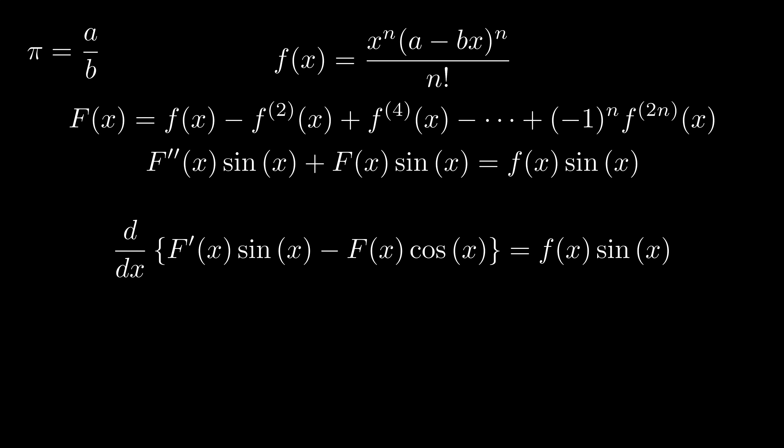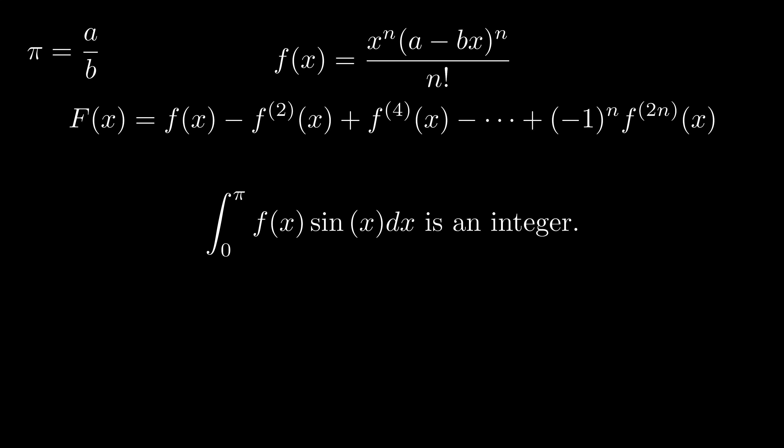We construct such an expression because big F(x) has integer values at zero and pi. To make use of this fact, we have to apply the fundamental theorem of calculus. The integral of a function's derivative is just the function itself. Our left hand side is reduced to big F(pi) plus big F(zero), and they are both integers. Everything we have done up to this point is to prove that f(x) sin(x) dx integrated from zero to pi is an integer.